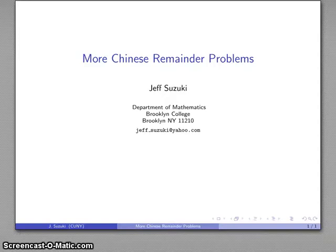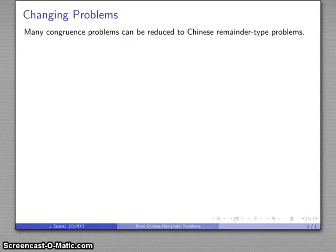Now it turns out the Chinese remainder problem is very useful because one of the things that we can do is take a congruence and reduce it to something that can be solved using the Chinese remainder algorithm.